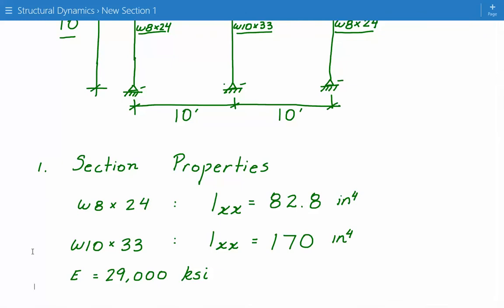So for W8 by 24, the second moment of inertia is 82.8 inches to the fourth power. And for W10 by 33, the second moment of inertia is 170 inches to the fourth power. And E for steel, the Young's modulus is 29,000 KSI.